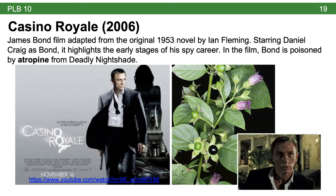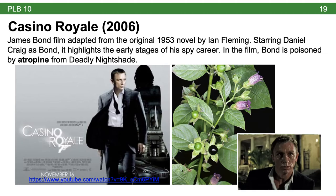Moving into the 2000s: Casino Royale from 2006 stars Daniel Craig as James Bond, based on the original 1953 novel by Ian Fleming. Part of the story involves James Bond being poisoned by atropine from deadly nightshade. The clip shown features him dramatically getting his heart restarted by his girlfriend — a great connection to our earlier discussion of plants as poisons.